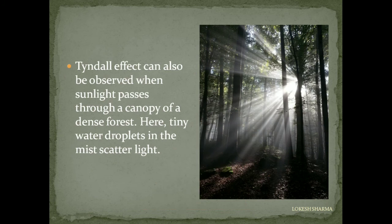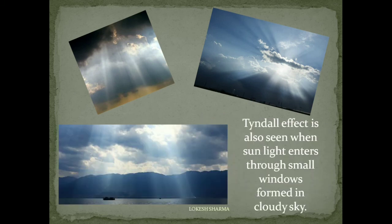The Tyndall effect can be seen when a fine beam of sunlight enters a room through a small hole, making particles visible via scattered light. It can also be observed when sunlight passes through a canopy of a dense forest, where tiny water droplets in mist scatter light, or when sunlight enters through small windows between clouds, especially during the rainy season.